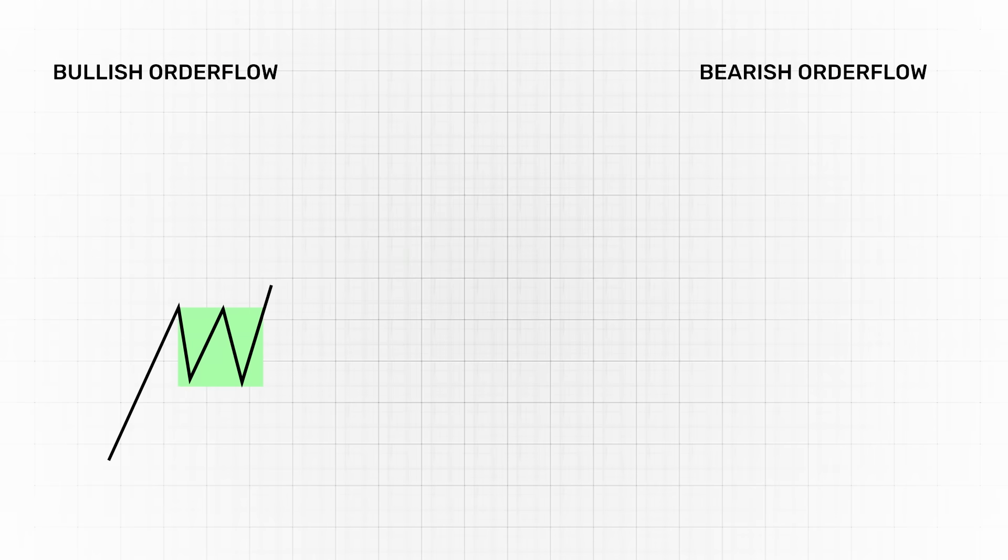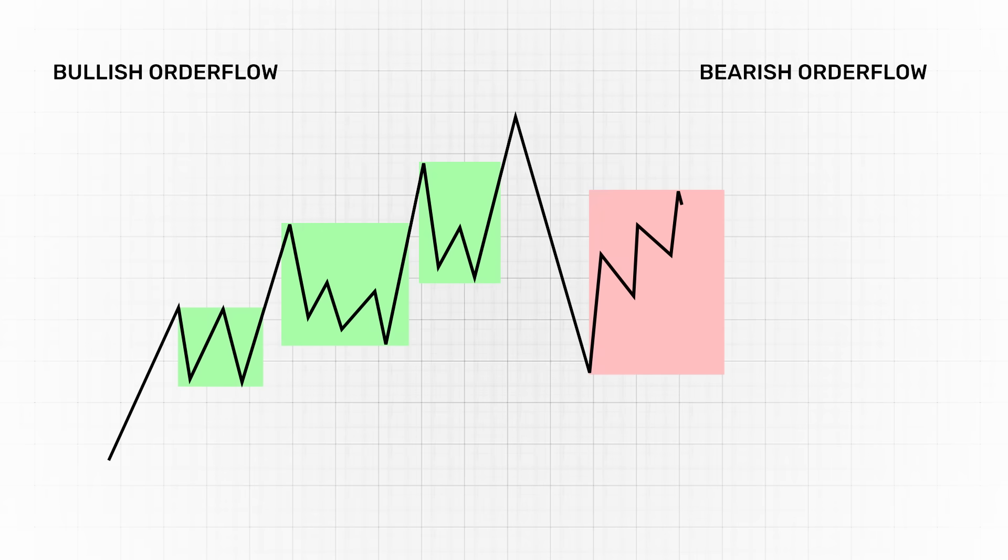And it's that continuation is what we are looking to trade in line with the institutional order flow. This is the cycle and heartbeat of the market where order flow will continue in one direction until there is an overwhelming imbalance between supply and demand in the opposite direction. Price is constantly seeking liquidity to rebalance price.